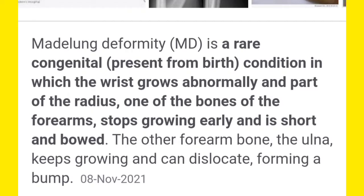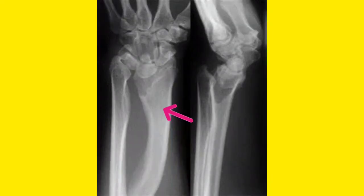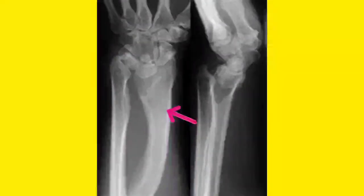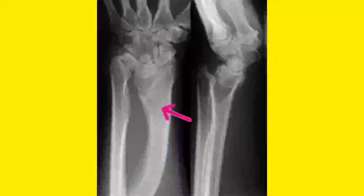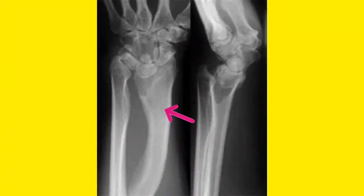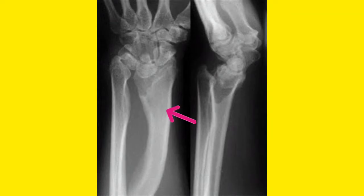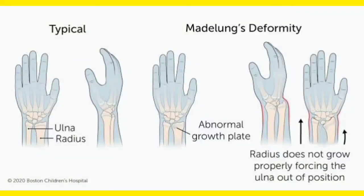The radius becomes short and bowed, creating a curvature. I will show you the X-ray so you can understand. Looking at this picture, you can see the radius has stopped growing — it is short, curved, and bowed. This is Madelung deformity.